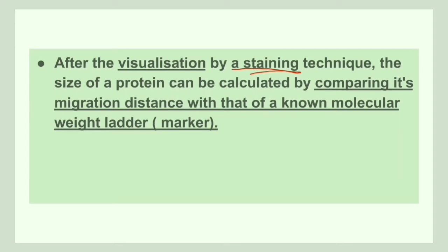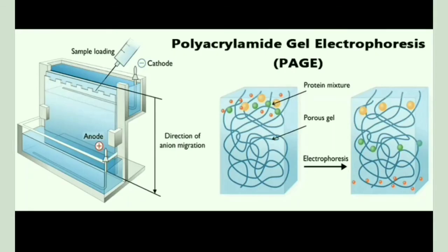After the staining, the migration distance is calculated for comparing band positions. This is done using a molecular weight ladder. This diagrammatic representation shows polyacrylamide gel electrophoresis — the sample is loaded to the wells at the cathode and allowed to move towards the anode. The protein mixture separates according to size: smaller molecules migrate faster and larger molecules migrate more slowly.